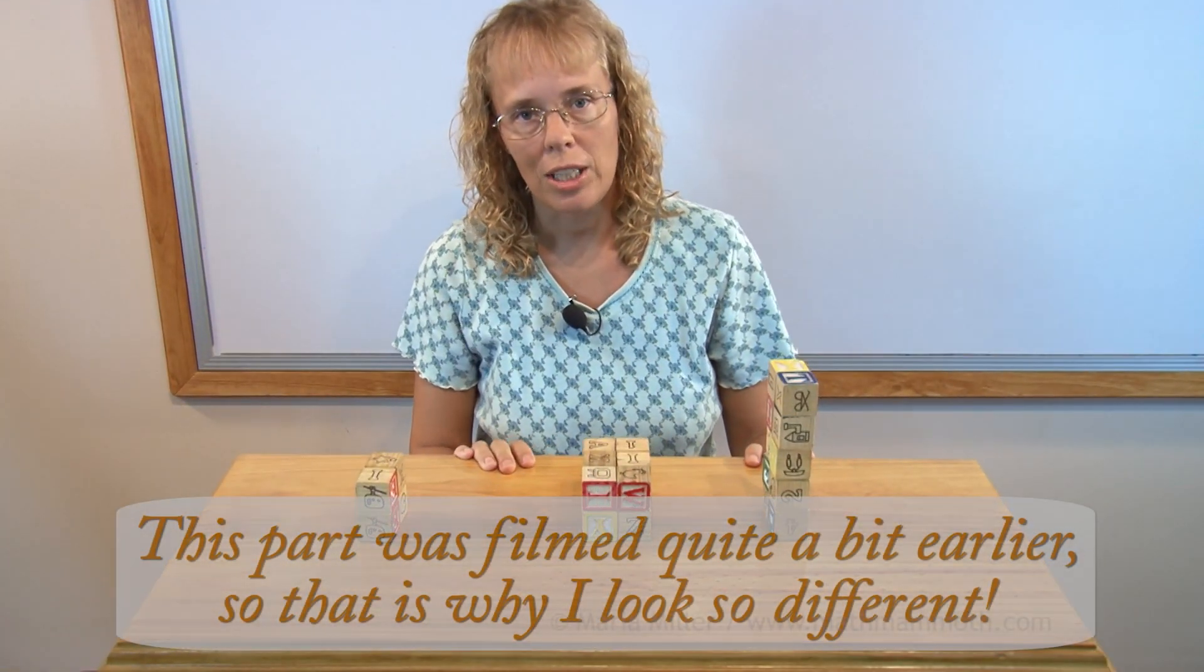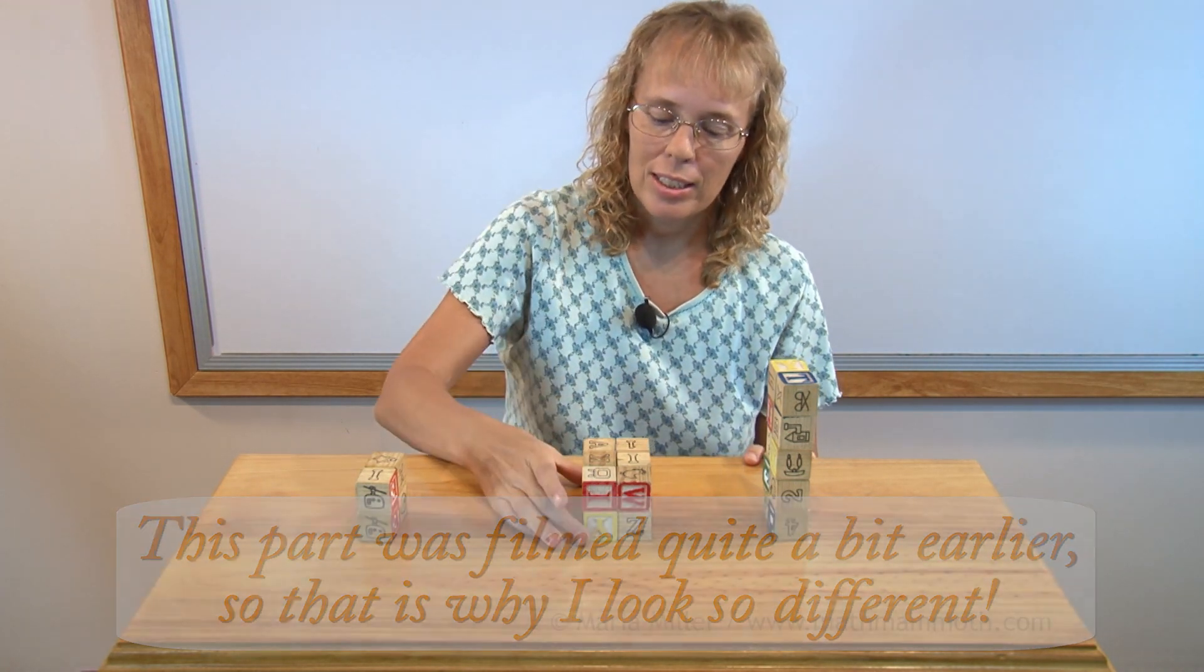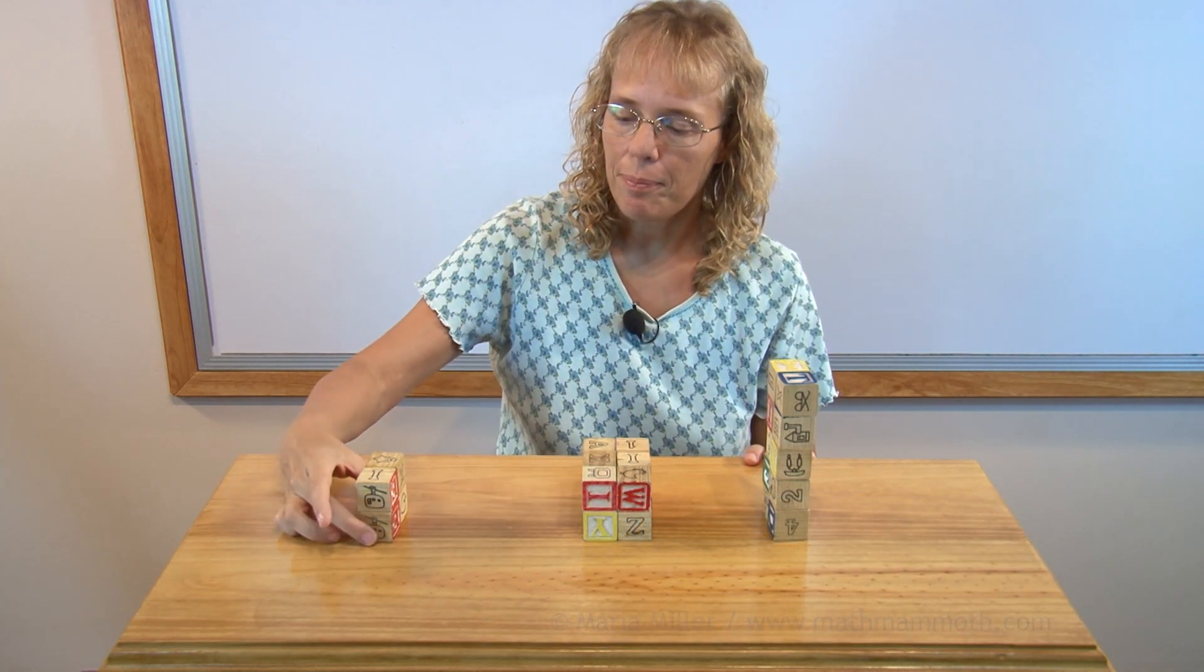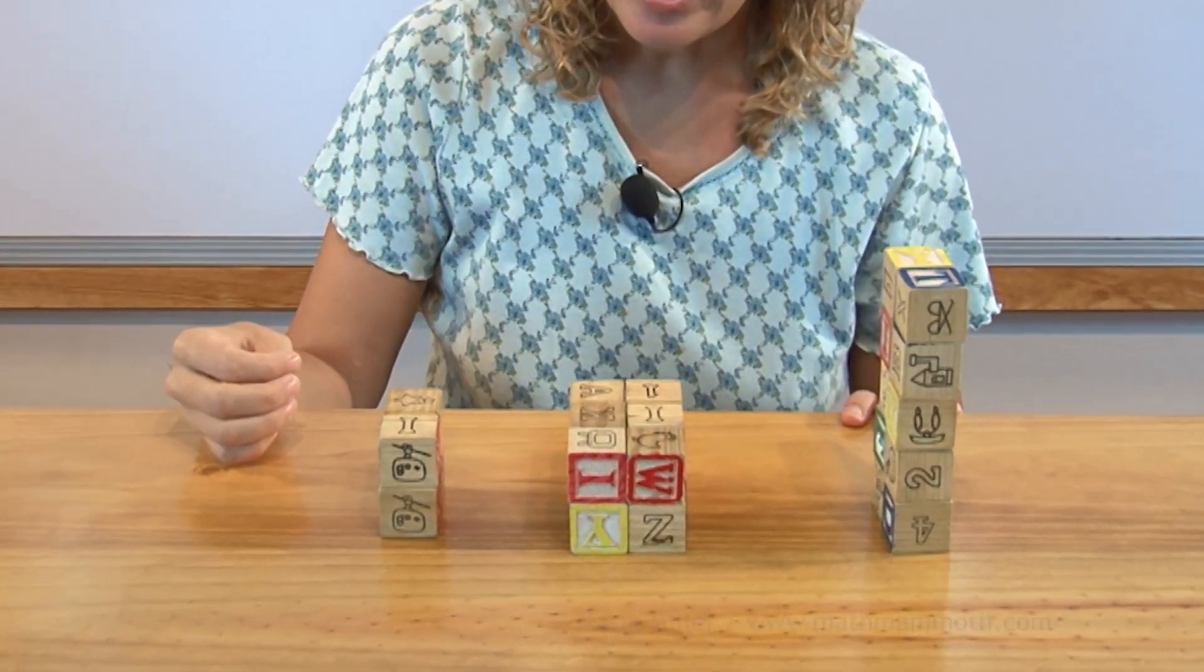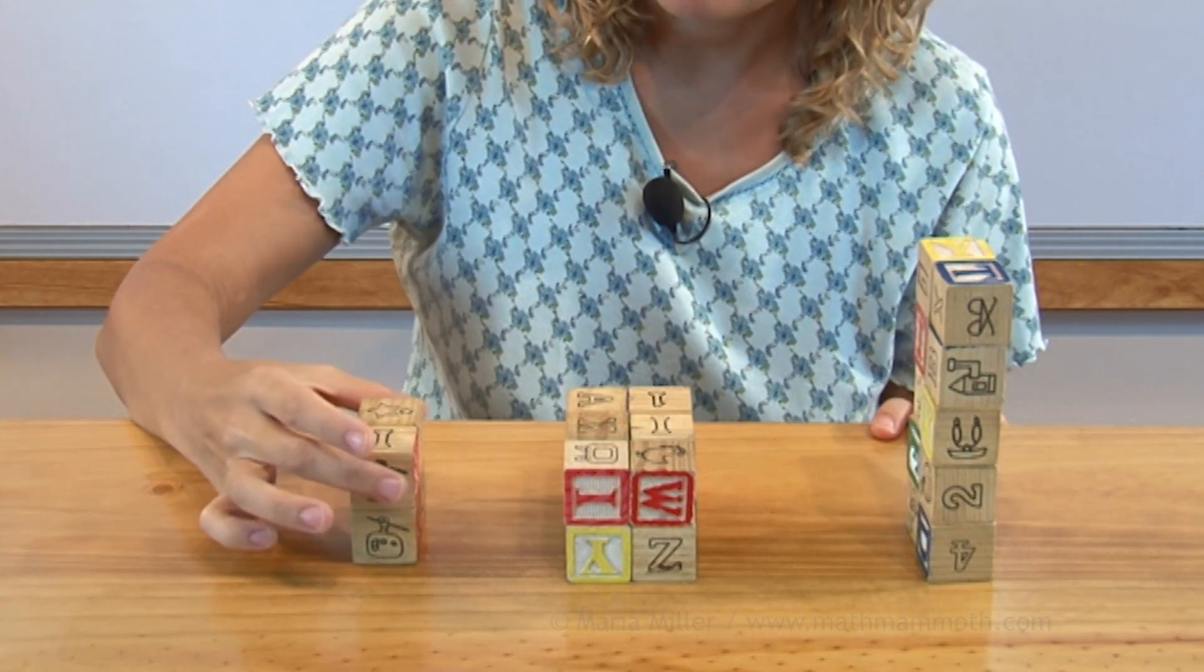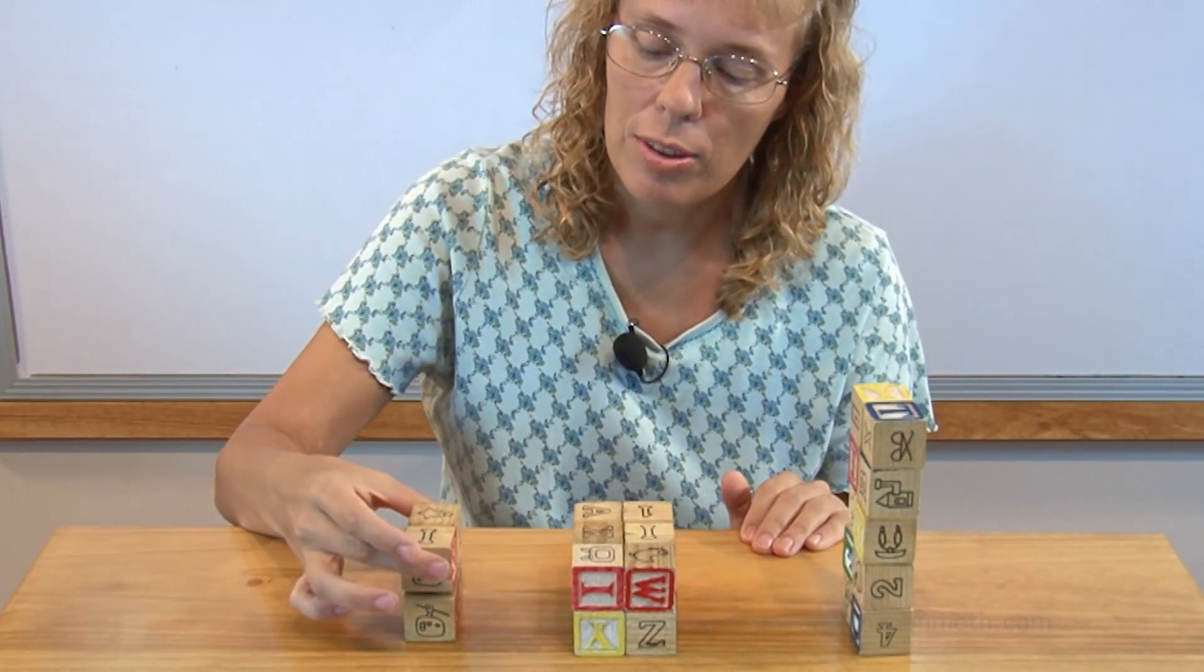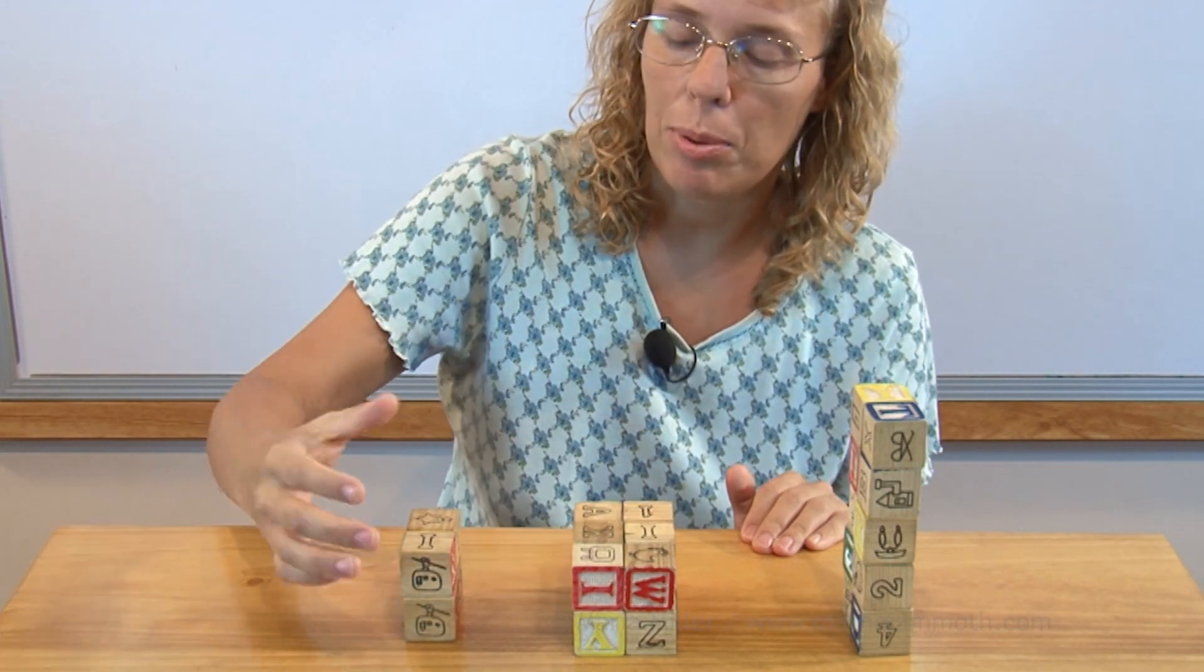Another thing children need to understand is the volume of a box, or of a rectangular prism. And let's look at some examples here that I made. Basically the idea here is that instead of counting the blocks one by one, you can just look how many are here on the bottom, and then go that many times how many layers up it goes.